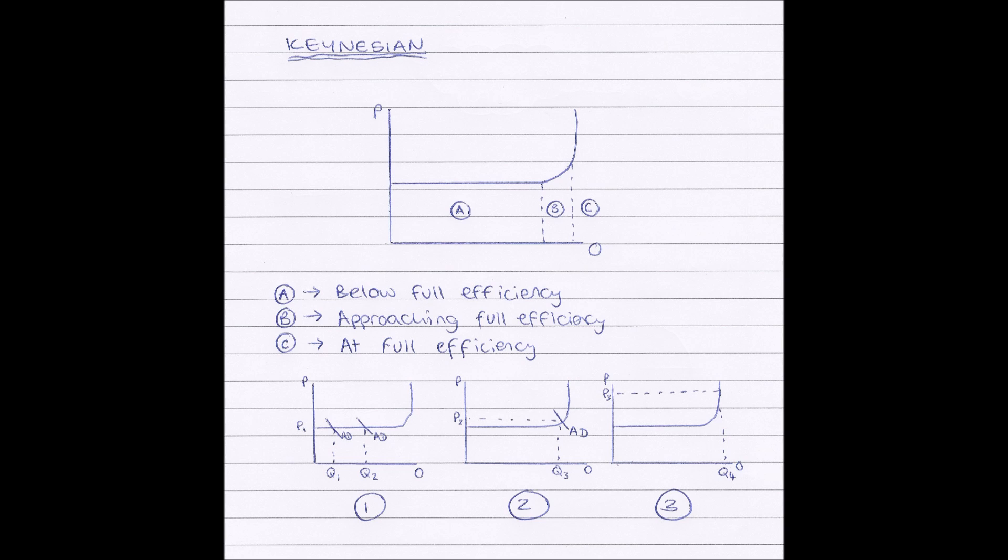Just like normal, on our y-axis we have price, on our x-axis we have output. But our curve looks slightly different to normal.